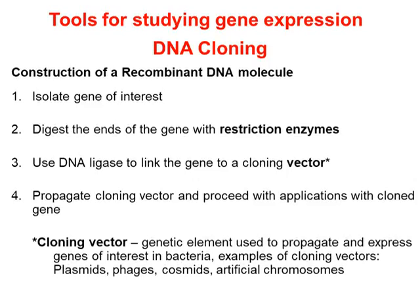للحصول على الـ recombinant DNA، نقوم بعملية القص واللصق: أقطع من الكائن الذي يحتوي على الجين المطلوب وألصقه في كائن آخر معروف بالتكاثر السريع في plasmid. أشهر cloning vector هو الـ E. coli لأن له plasmids قادرة على التكاثر لوحدها. أقوم بـ digestion باستخدام restriction enzyme لعزل الجين المطلوب، ثم نفس الـ restriction enzyme لقطع الـ cloning vector، ثم ligation — أي القص واللصق — لإدخال الجين المطلوب في الـ vector.